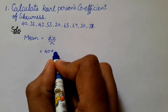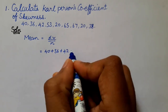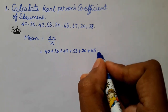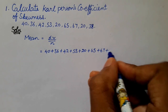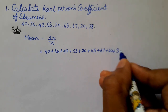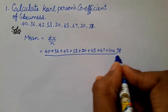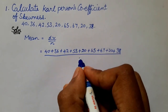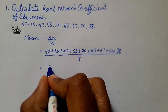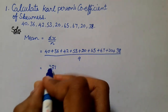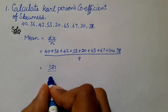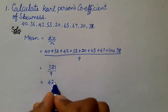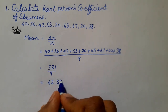The data values are: 40 plus 36 plus 42 plus 53 plus 20 plus 65 plus 67 plus 20 plus 38, divided by n. The total number of observations n equals 9. The sum sigma x equals 381. So mean equals 381 divided by 9, which gives 42.333.